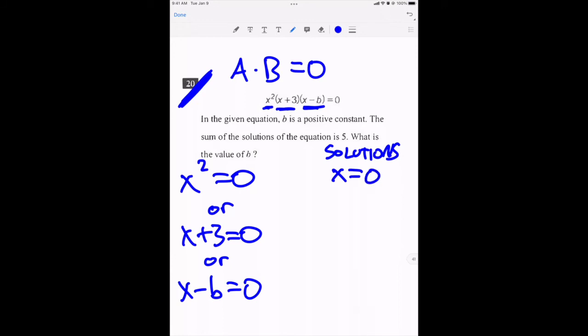For this one, what makes this second equation true? Well, if x was equal to negative three, that would get the job done. And I am told that the sum of all of the solutions is five. So zero plus negative three plus whatever this is is going to give me a sum of five.